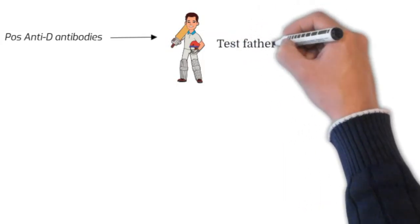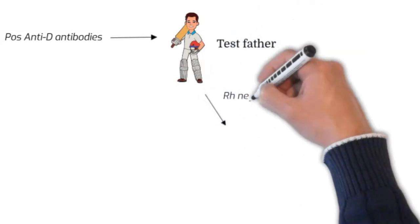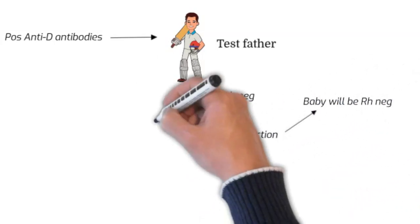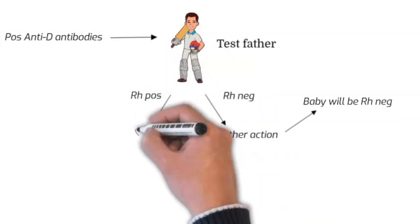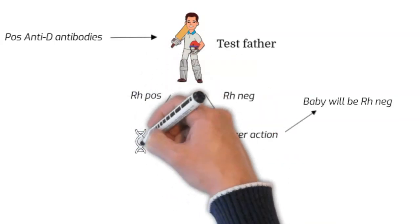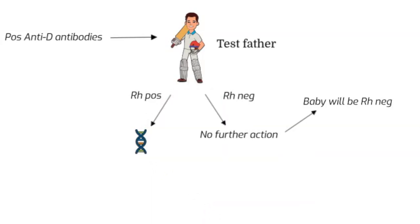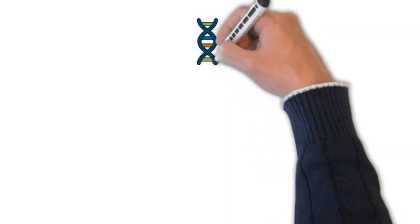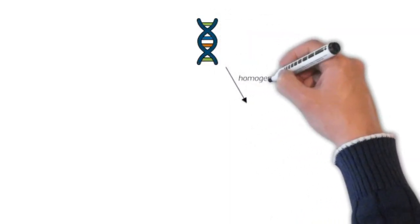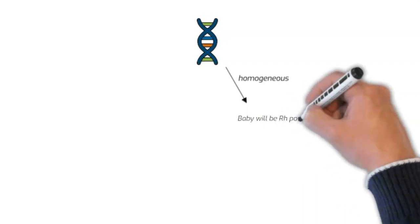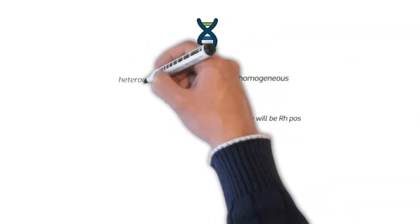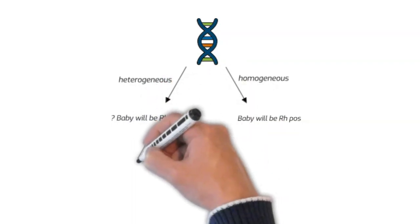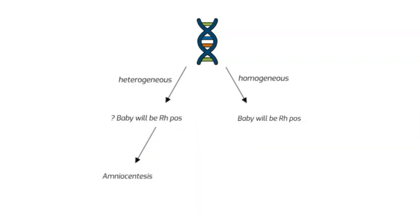The next step would be testing the father if possible. And if the father is RH negative, then no further action is required because the baby will be RH negative. If the father is RH positive, however, we have to test whether the father is homozygous or heterozygous for the RH antigen. If the father is homozygous, in this case, the baby will definitely be RH positive. If the father is heterozygous, in that case, the baby might be RH positive or negative. In this situation, we can perform amniocentesis to check the RH status of the baby.